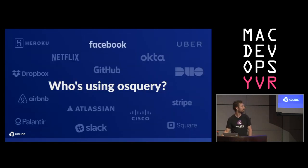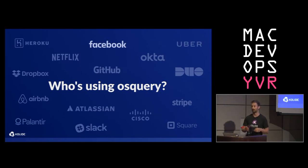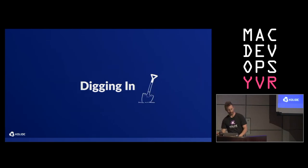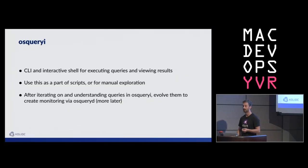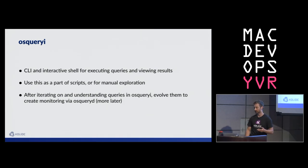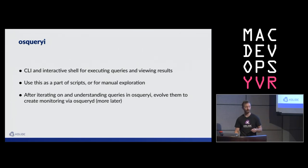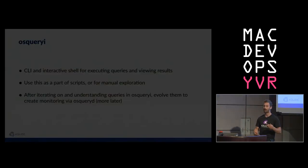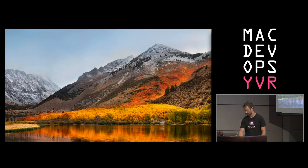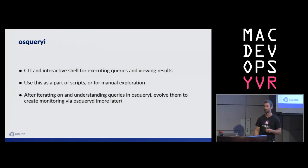Who's using OS Query? We have a pretty awesome group of companies — this is really just the beginning of a big community who's using it, it's really all over. So let's dig into what using OS Query looks like. The first tool I'll talk about is osqueryi, the interactive shell. It's our command line interface, and it lets us start exploring what data we have access to. We can use it as part of scripts, for manual exploration, and we recommend a workflow where you start gaining understanding through osqueryi, then evolve it into a monitoring and alerting pipeline through the OS Query daemon.